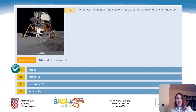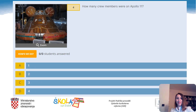Question 4: How many crew members were on Apollo 11? A. 1. B. 2. C. 3. Or D. 4. The correct answer is C — there were three crew members.